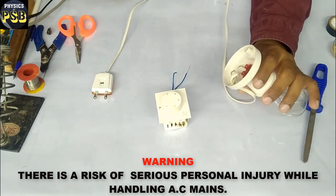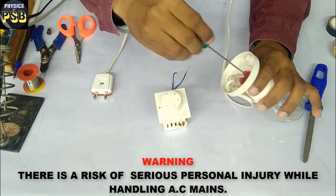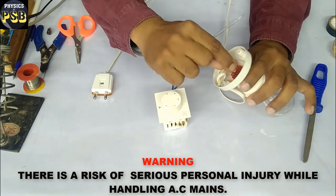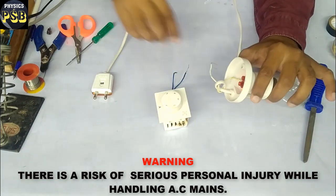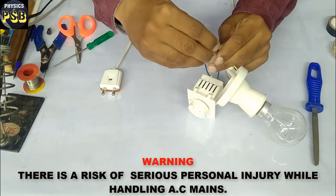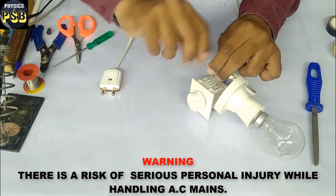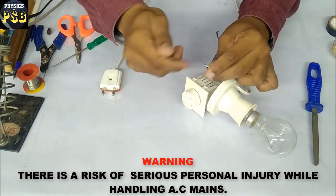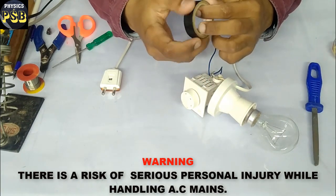To do so, first I will remove this wire from the socket. Then I will connect it to one terminal of the regulator this way. Then I will cover this with the insulation tape.